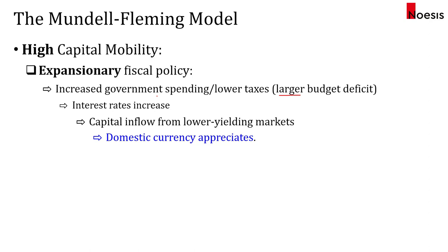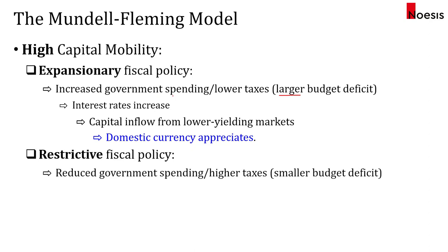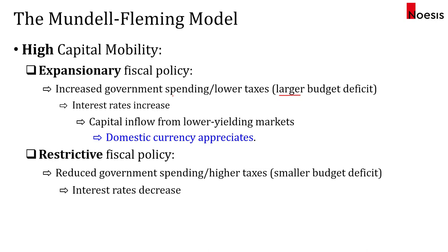On the other hand, if fiscal policy is restrictive, there will be reduced government spending or higher taxes, which leads to a smaller deficit. So interest rates will decrease, and that will lead to a capital outflow to higher-yielding markets. When foreign investors pull out their capital from investments, that will lead to depreciation in the domestic currency.